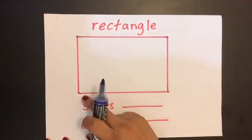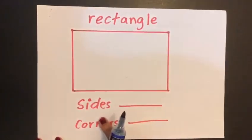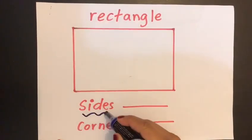This shape is called a rectangle. Let's find out the sides and the corners of a rectangle. These are called the sides: one, two, three, four. So the rectangle has one, two, three, four sides.